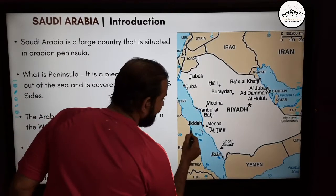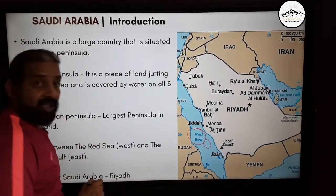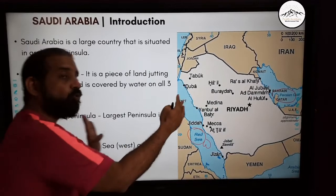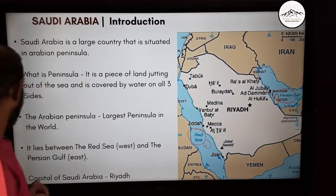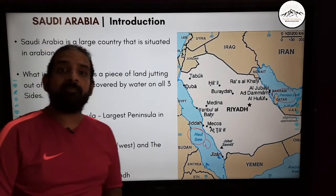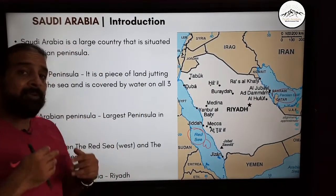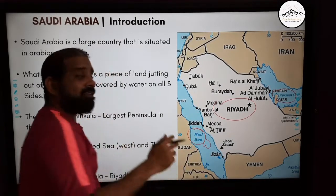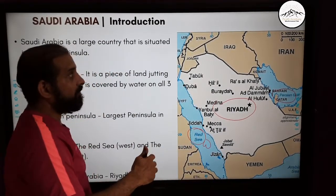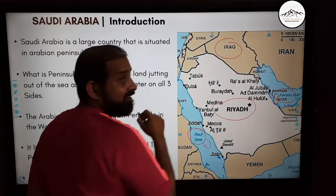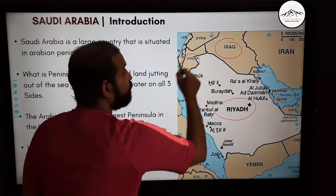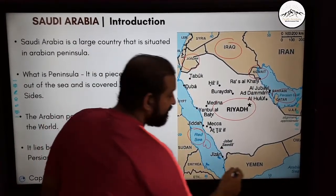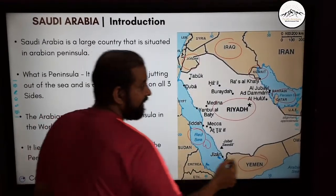So there is a Red Sea in the west and the Persian Gulf in the east — these are the two main seas. The capital of Saudi Arabia is Riyadh, just like our capital is New Delhi. Neighboring countries include Iraq, Jordan, Kuwait, Yemen, and Oman.